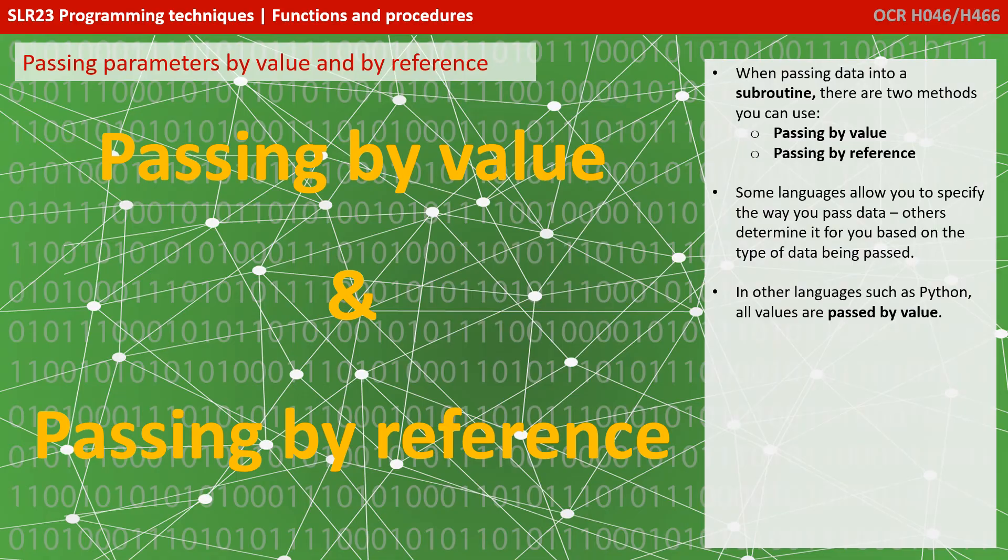When passing data into a subroutine, there are two methods you can use: passing by value and passing by reference. Some languages allow you to specify the way you pass data, others determine it for you based on the type of data being passed. In other languages, such as Python, all values are passed by value.